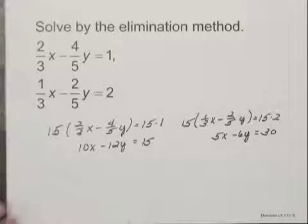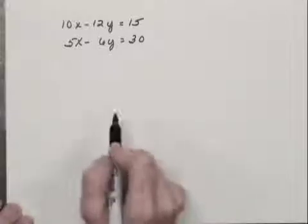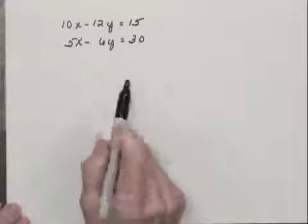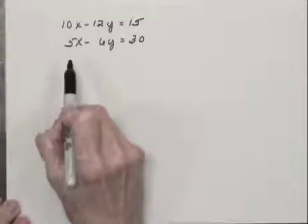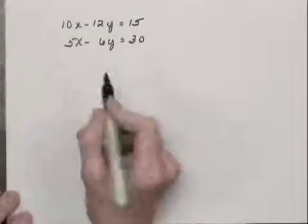So now I have a system of two equations with no fractions in it. And this is the system, just rewritten. I want to use the elimination method, so I want to multiply one of these equations by something that will allow me to eliminate a variable. And let's multiply the second equation by negative two to eliminate the x terms.